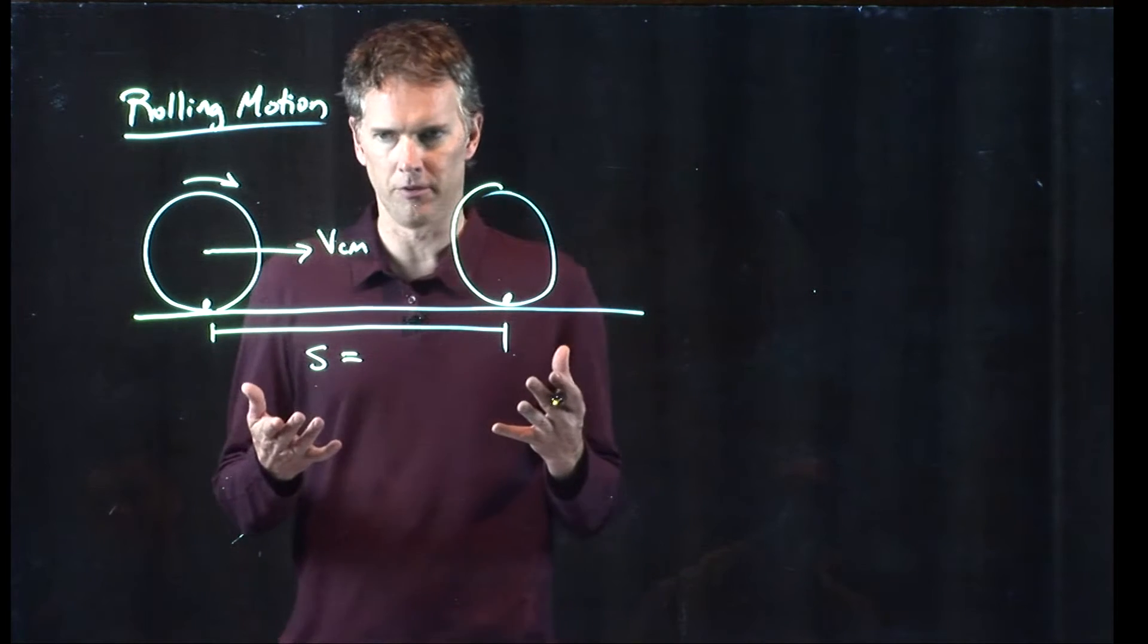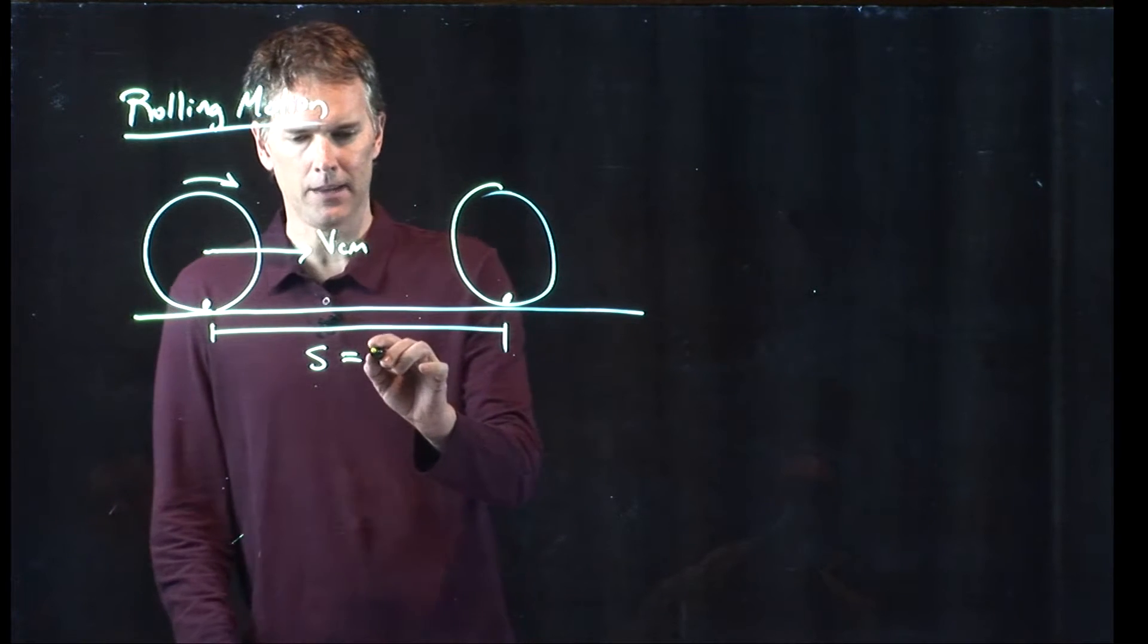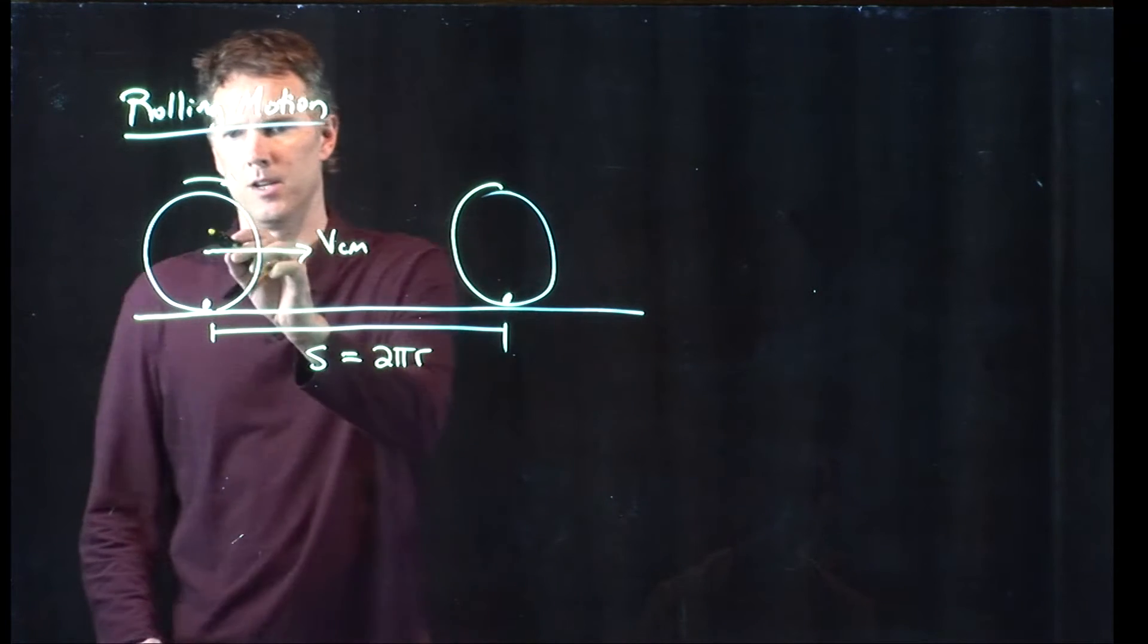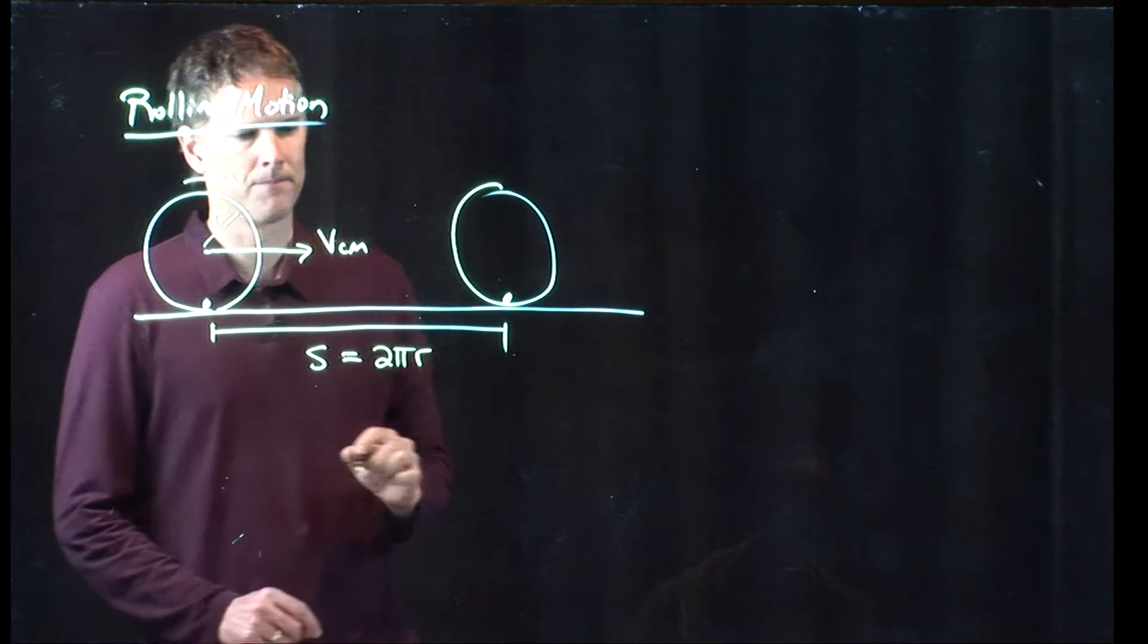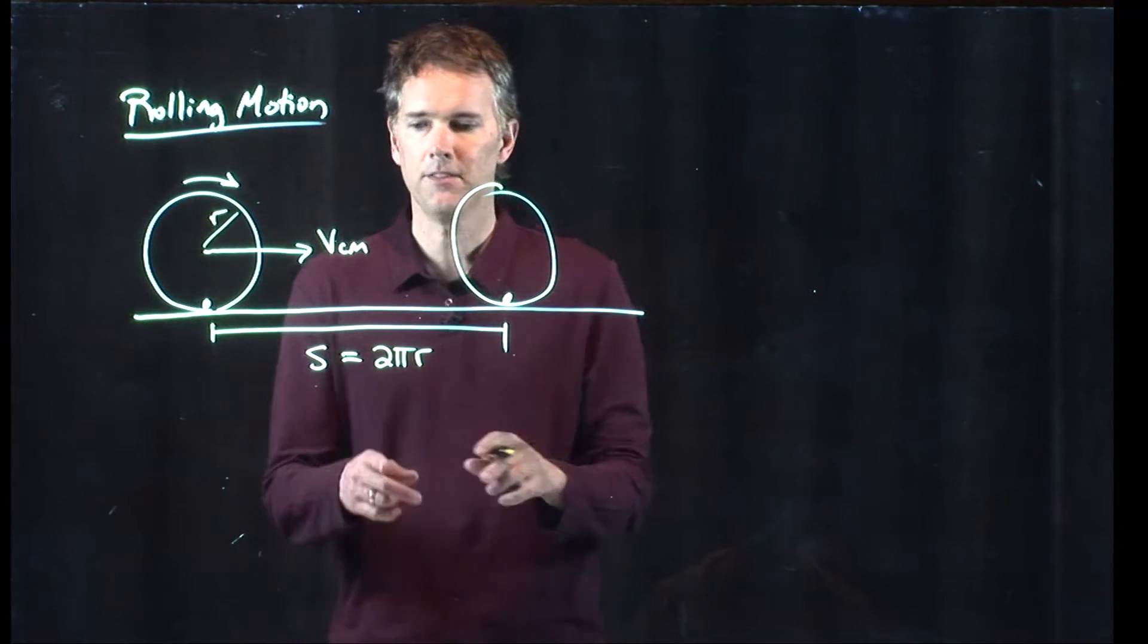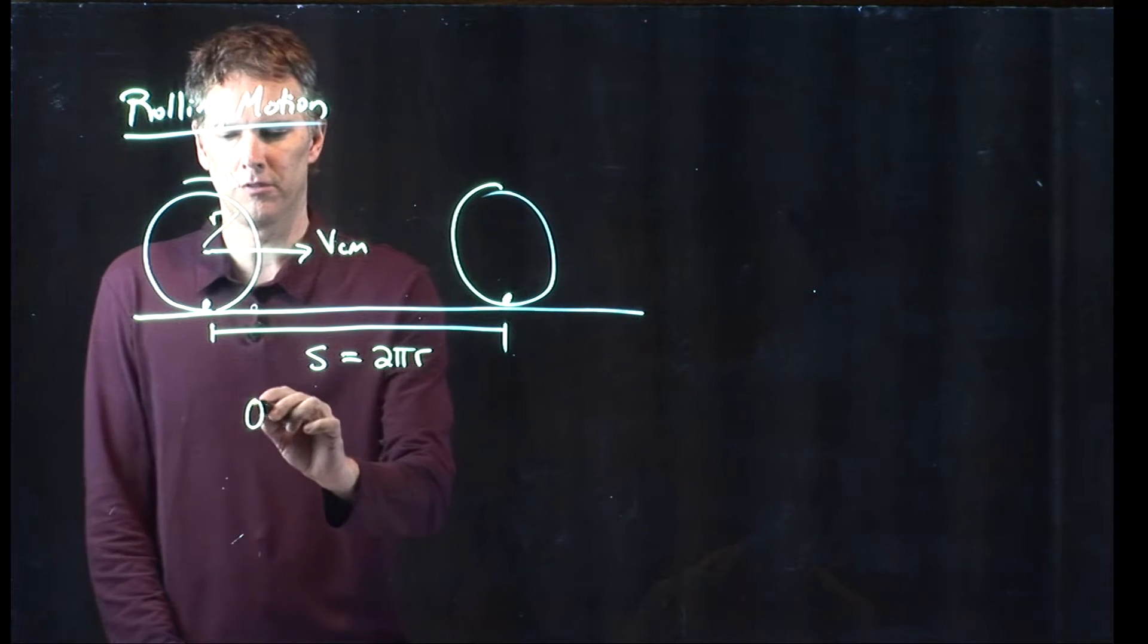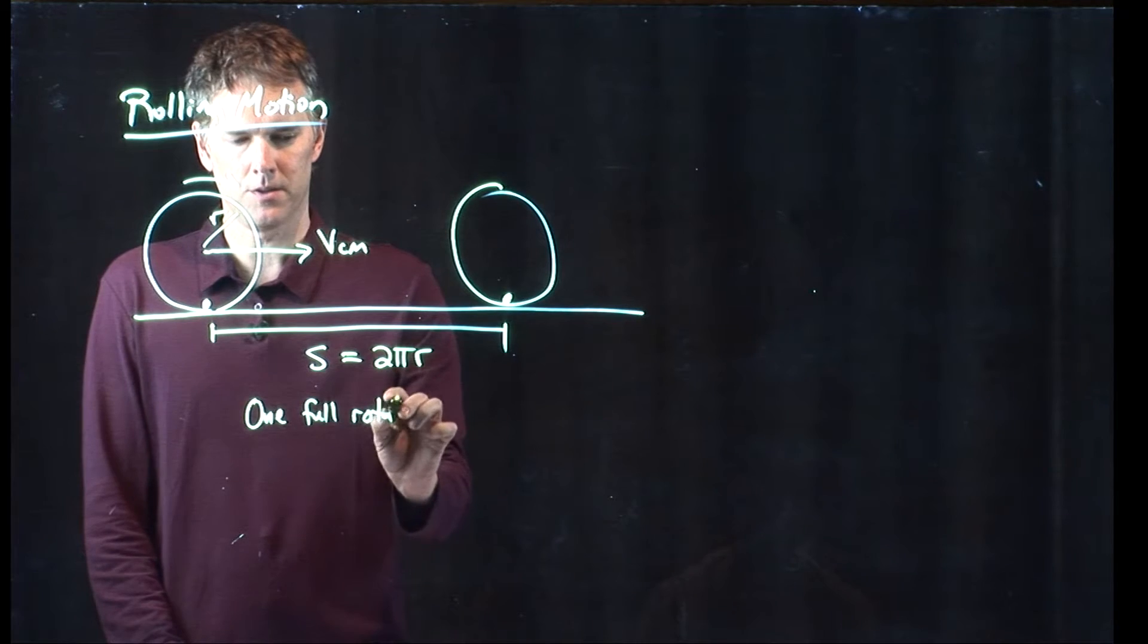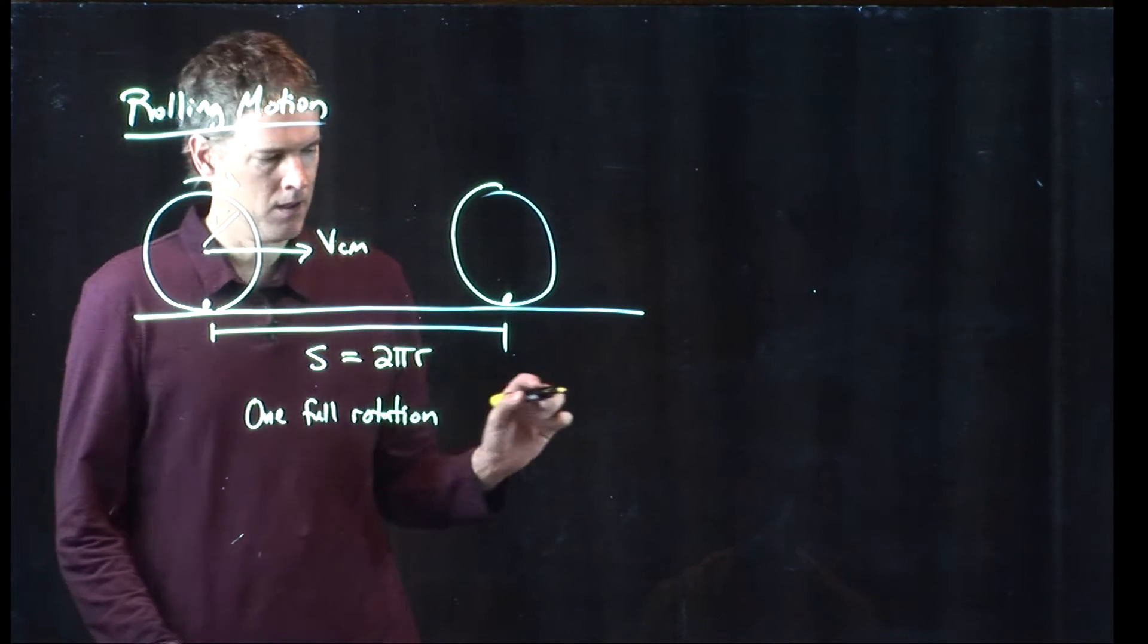Well it's just the circumference of the wheel, right? And the circumference is just 2πr. Here is the radius r. So that's if we go one full circle, one full rotation.